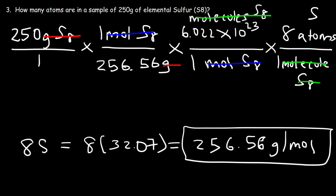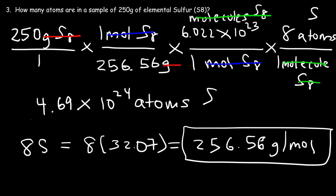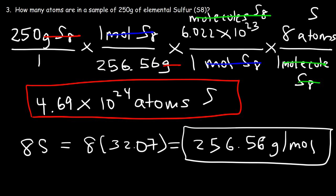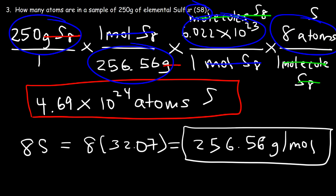So it's 250 divided by 256.56, then multiply by 6.022 times 10 to the 23, and then times 8. The answer is 4.69 times 10 to the 24 atoms of sulfur. Notice that the first two steps are identical: take the mass in grams, divide by the molar mass, and multiply by Avogadro's number. The only difference is that S8 is a molecule, not an atom, so you have to incorporate the fact that there are eight atoms of sulfur in one molecule of S8. Multiply your final answer by eight and you'll get the right answer.